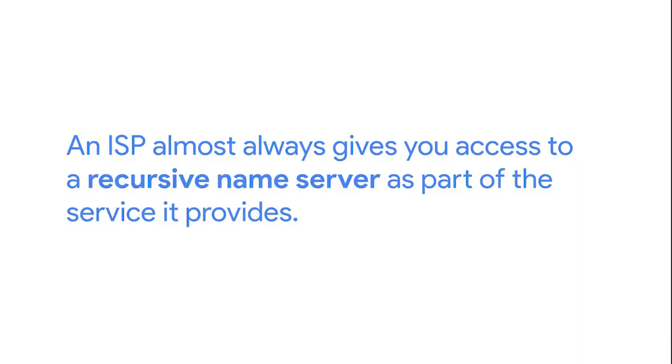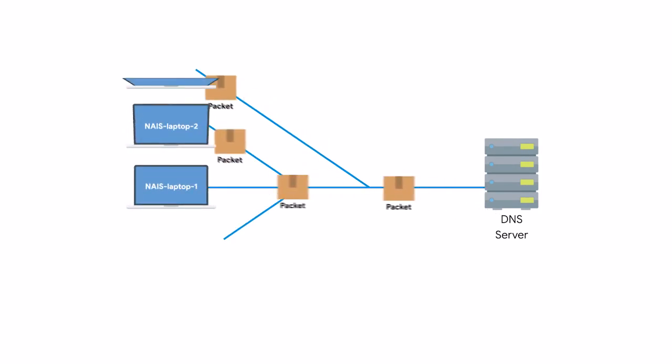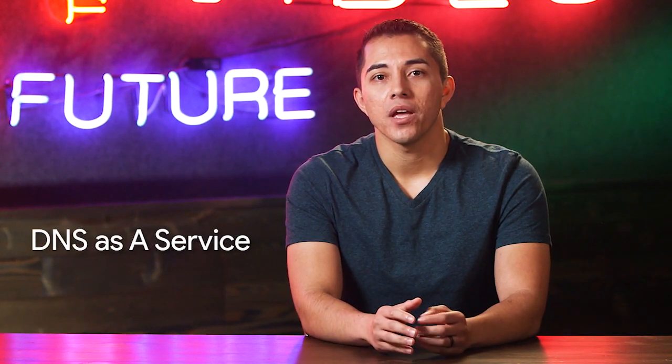Having functional DNS is an important part of a functional network. An ISP almost always gives you access to a recursive name server as part of the service it provides. In most cases, these name servers are all you really need for your computer to communicate with other devices on the internet. But most businesses also run their own DNS servers — at the very least, this is needed to resolve names of internal hosts. A third option is to use a DNS as a service provider, and it's getting more and more popular.